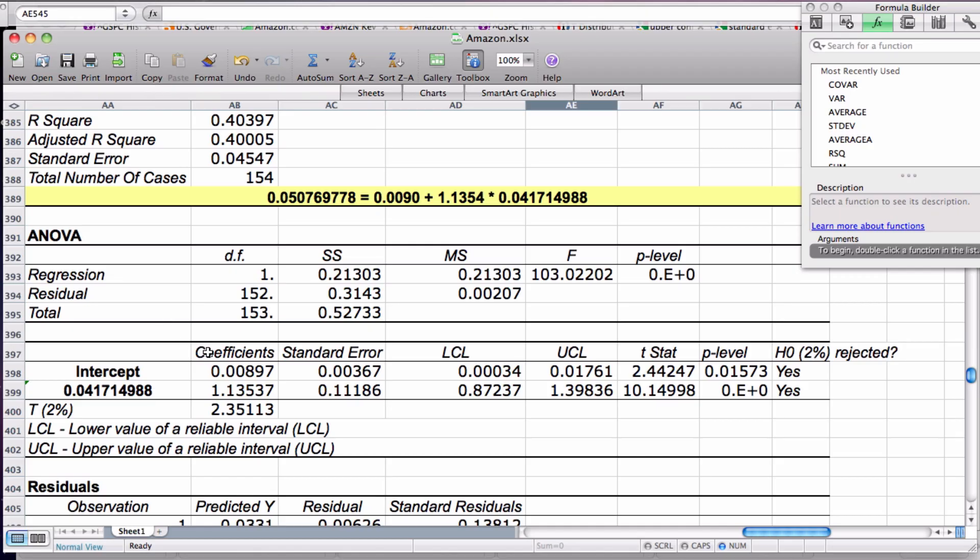Here we have our coefficients, which are our intercept for our line and our slope, or the beta. Again, we have the standard error of the coefficients and the beta.